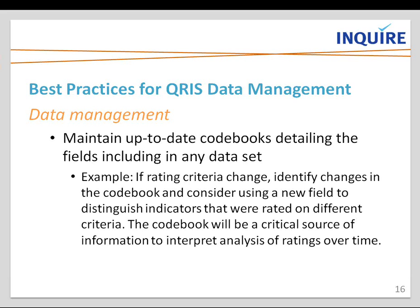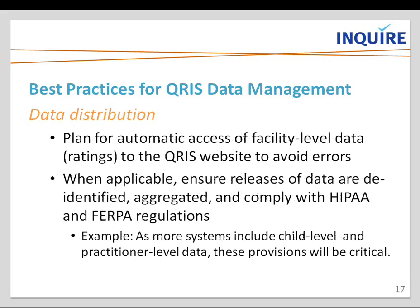The last phase of the data lifecycle is data distribution — when information from the QRIS is made available to different sets of stakeholders. Some of this data will be public, like maybe a program's overall rating, and some will remain private and only distributed to groups on an as-needed basis. Your site that displays public rating information should be well integrated with your QRIS data system, such that changes to ratings within the QRIS data system are automatically updated to the public site.